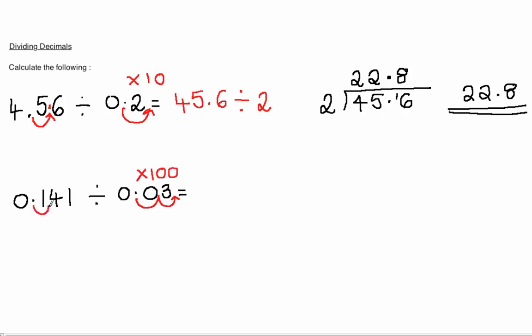We must also now multiply the number we are dividing into by 100 as well, making this number 14.1. So now our calculation is 14.1 divided by 3.